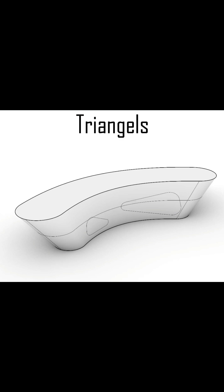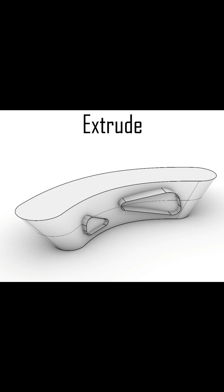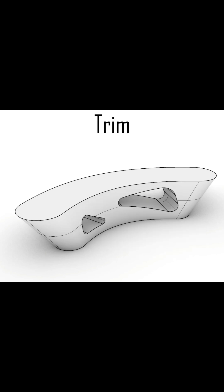Draw two triangles in the front view and round the corners with the fillet curve tool. Extrude the curve to cross the table, then split it and trim it to make a hole.